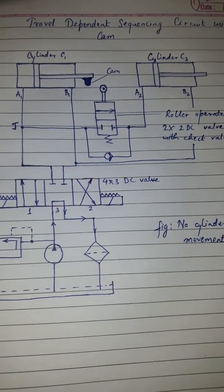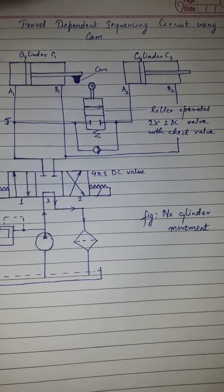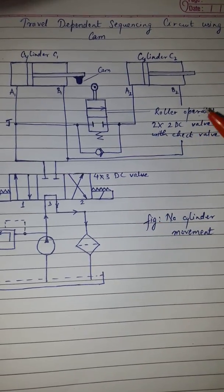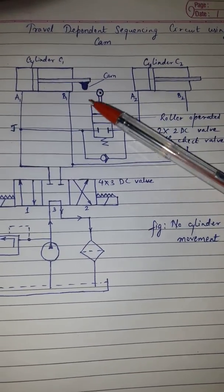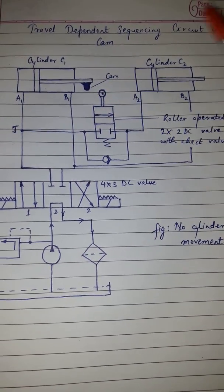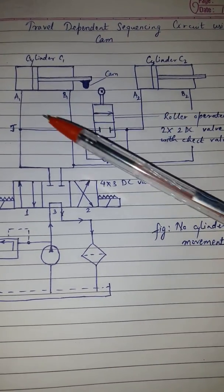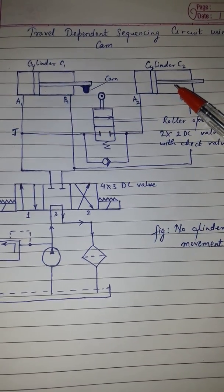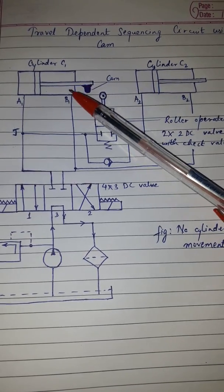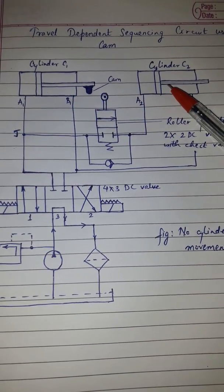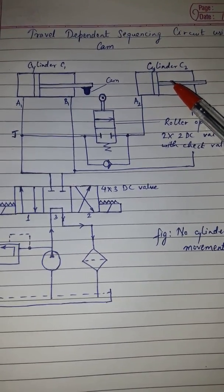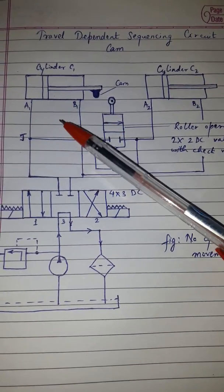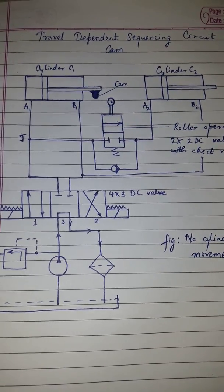Today's topic of discussion is the travel dependent sequencing circuit using CAM. The circuit shown is the travel dependent sequencing circuit using roller and CAM. In this circuit, cylinders C1 and C2 will be operated in sequence, but the movement of the pistons in C1 and C2 will overlap for some distance. The position shown in this circuit is the no cylinder movement position.